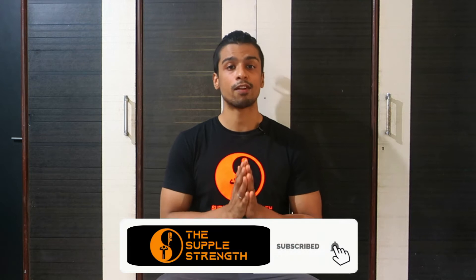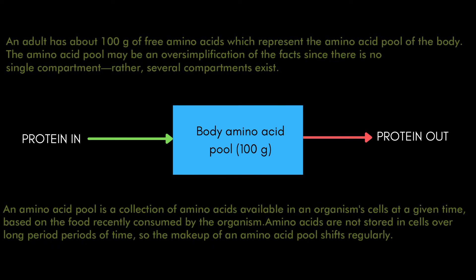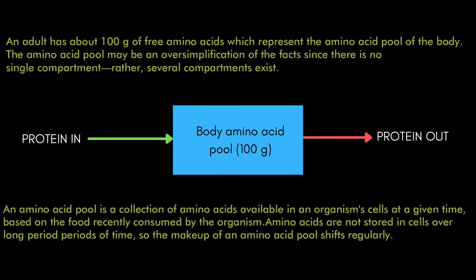Whatever protein you consume will first be broken down into amino acids. These amino acids — which are present in our cells and blood — are collectively referred to as the amino acid pool. This amino acid pool is around 100 grams for a healthy adult. It's not a fixed storage but rather a buffer that amino acids flow in and out of, always maintaining roughly 100 grams available.